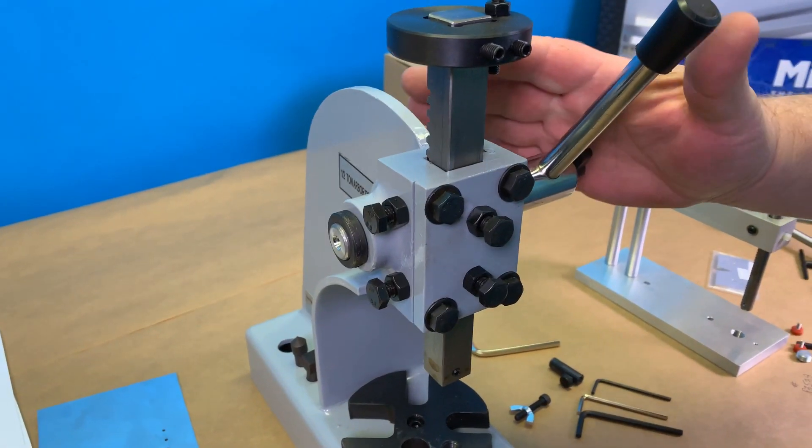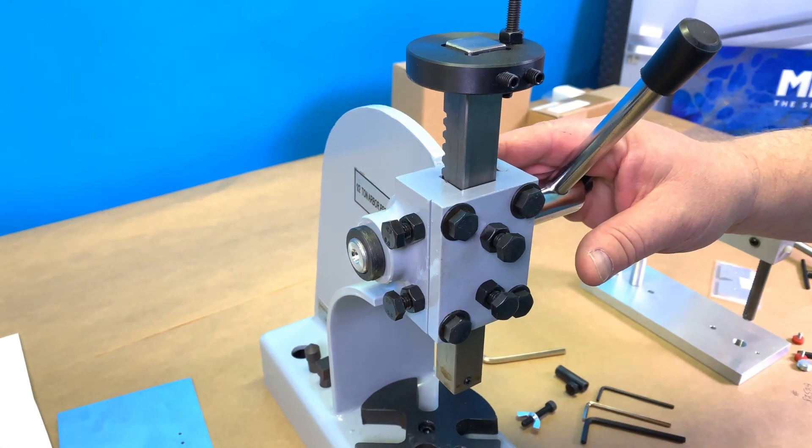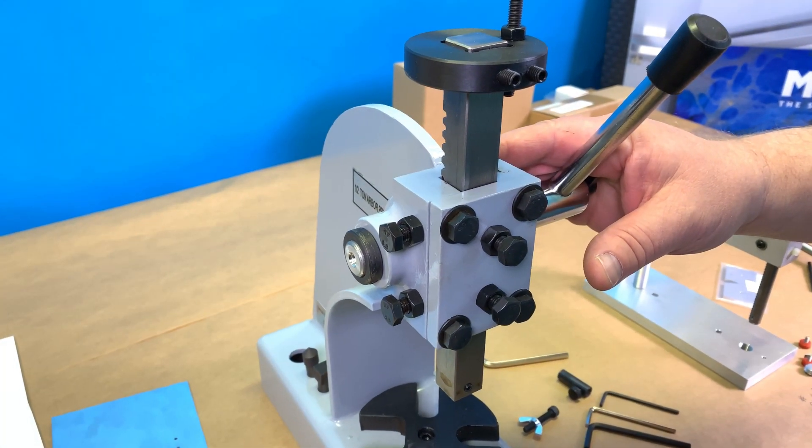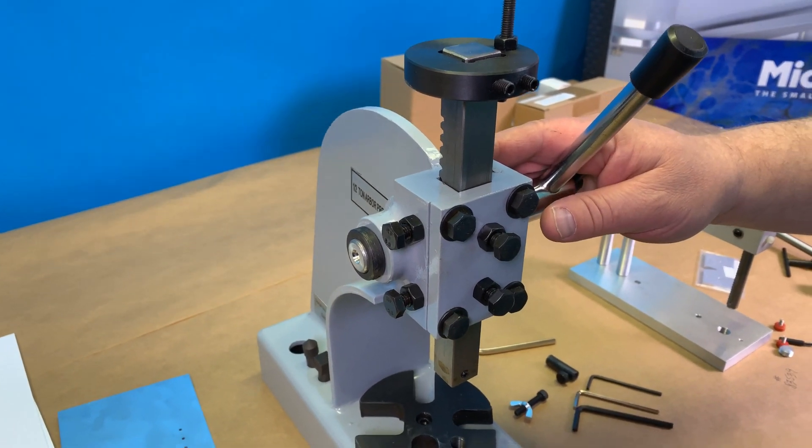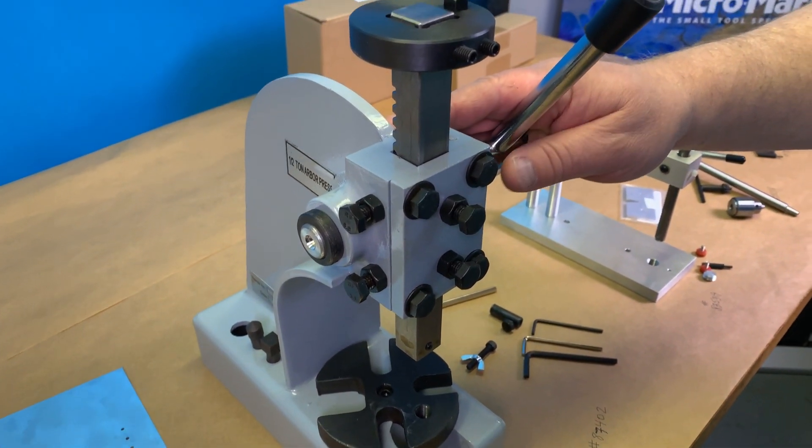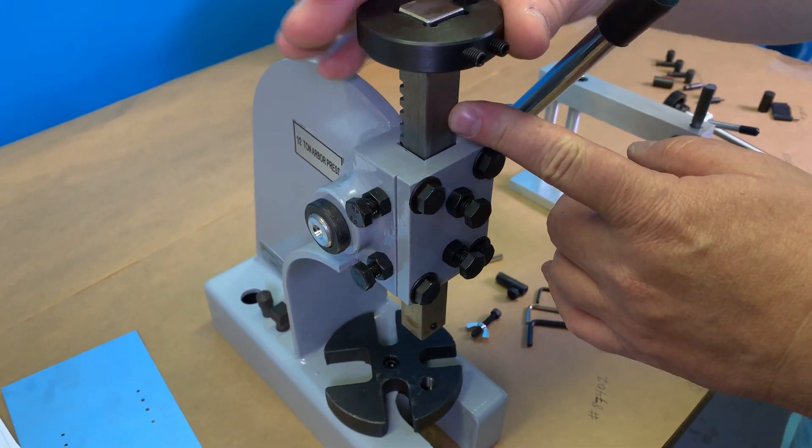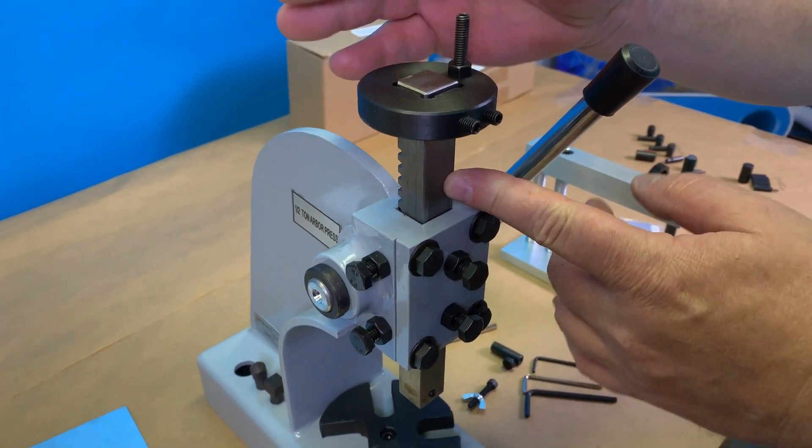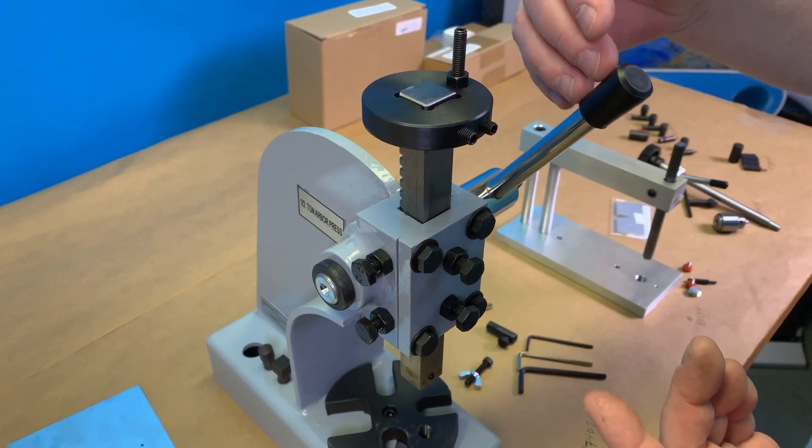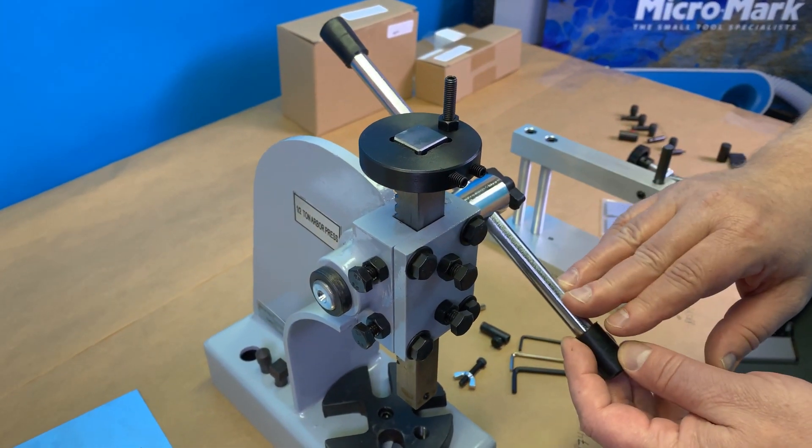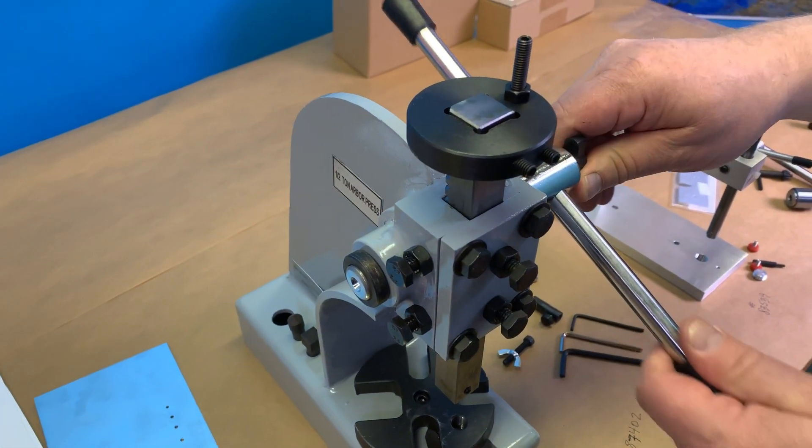When you purchase the 87402 press, it comes mostly assembled. There's a small amount of assembly required and degreasing of the parts. The ram comes installed. The ram lock does not. That's simply passing it over top and setting with these two set screws in place.